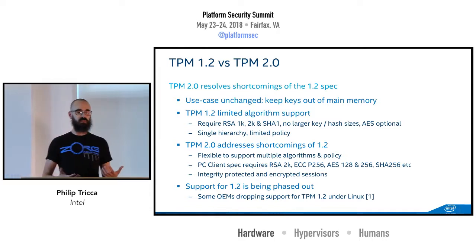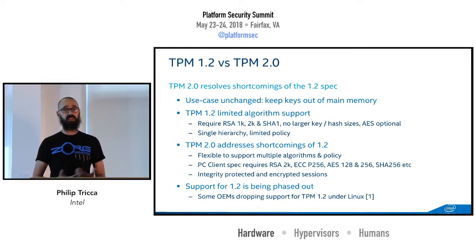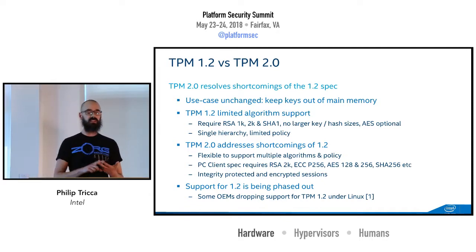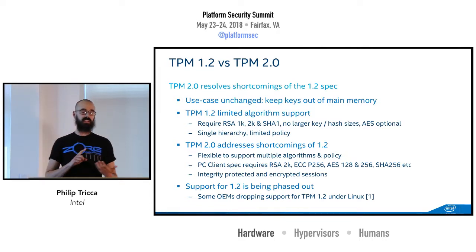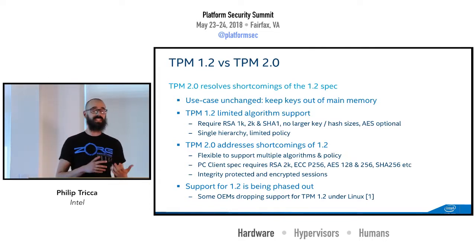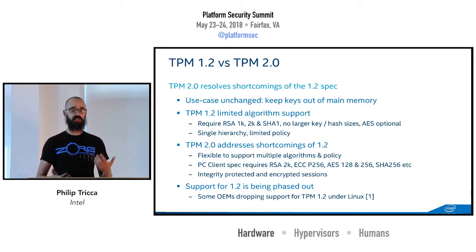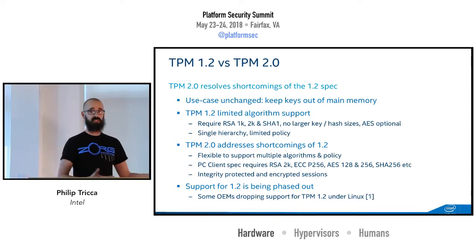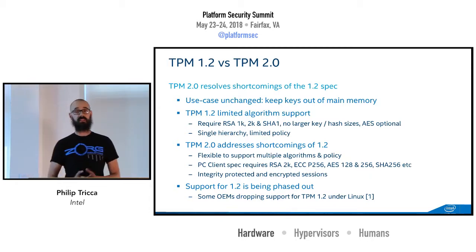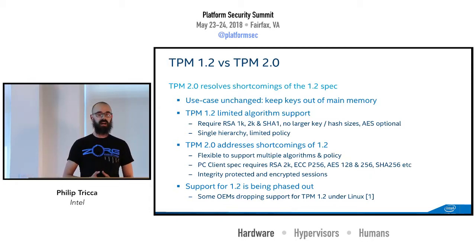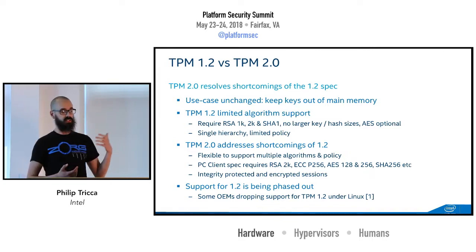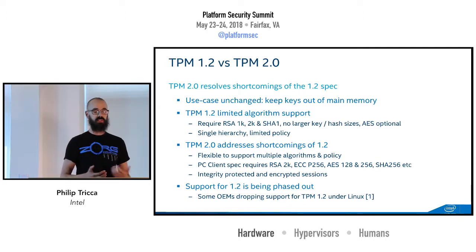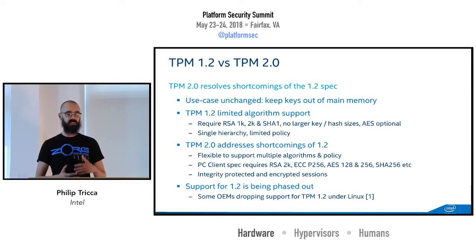The reason TPM 1.2 is being replaced by 2.0 is that it's very limited in the algorithms it supports. RSA 1 and 2K keys, SHA-1 — that's the big problem. There was really no way to add additional algorithms; the command structures, the buffers sent and received from the TPM in 1.2, are very specific to the actual algorithms themselves. There's also just a single hierarchy, and the policy was sufficient but limited.